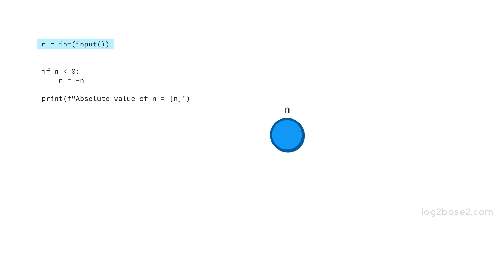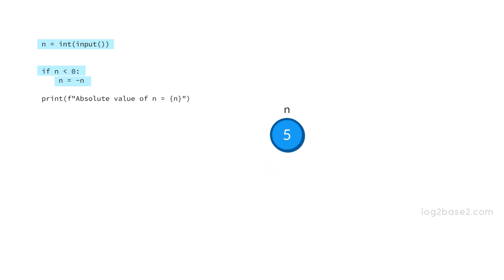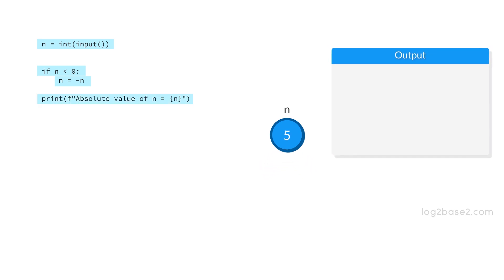Now suppose the user entered the number minus 5 and it will be stored in n. Check if n is less than 0 — and it is. So set n equal to minus n, so now n equals 5. Print: absolute value of n is 5.